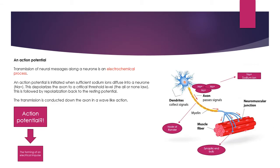We can see an example of a motor neuron on the right-hand side, and we need to be aware of the anatomy — how it's made up — but also how it interacts with our body in order to cause muscular contraction. Looking at the anatomy of a motor neuron first, we can see at the top, the blue part, we have these things called dendrites.